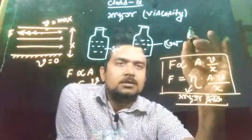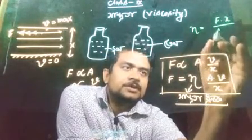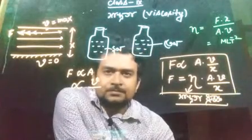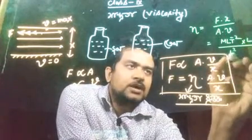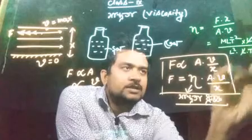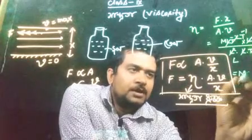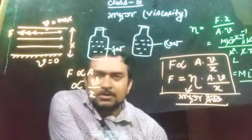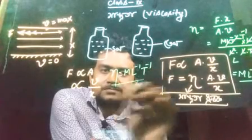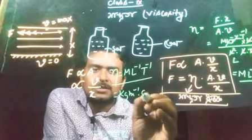This is the dimension of F into x divided by A into v. F means M L T to the power minus 2, x means L, A means L square, and v means L T to the power minus 1. So this is the dimension of viscosity coefficient to the power minus 1.